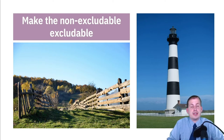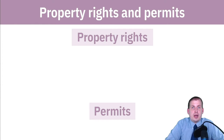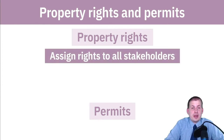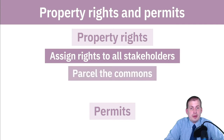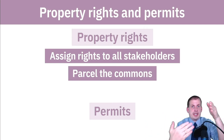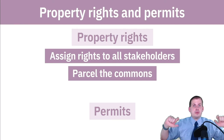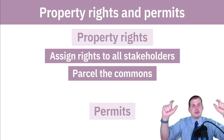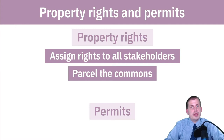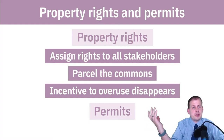The private sector solution is to make non-excludable things excludable. One way is to assign property rights to anyone using the commons and parcel it out to different people. If you have a community of farmers with a common field that's getting overused, you lay out a grid and assign each person a chunk. Then the incentive to overuse disappears because they're now internalizing the externality of overusing the commons.